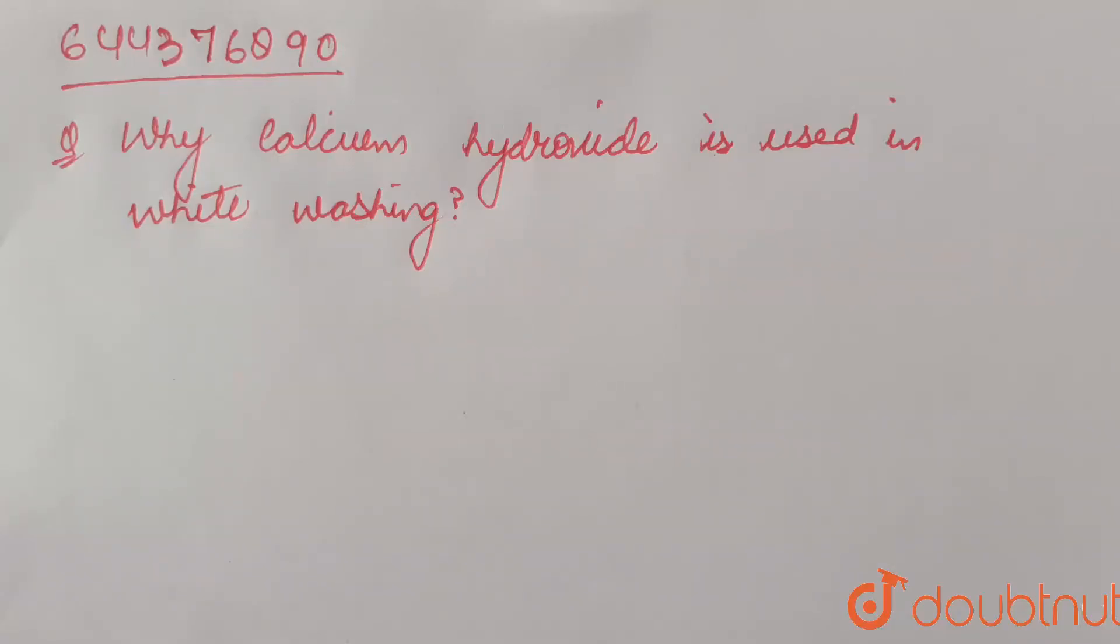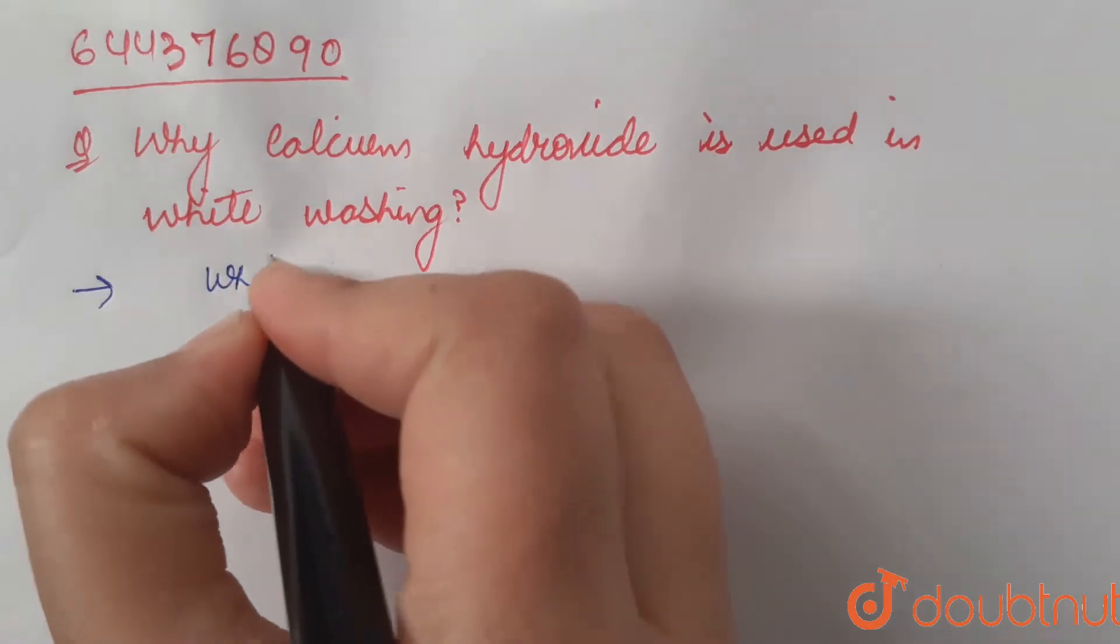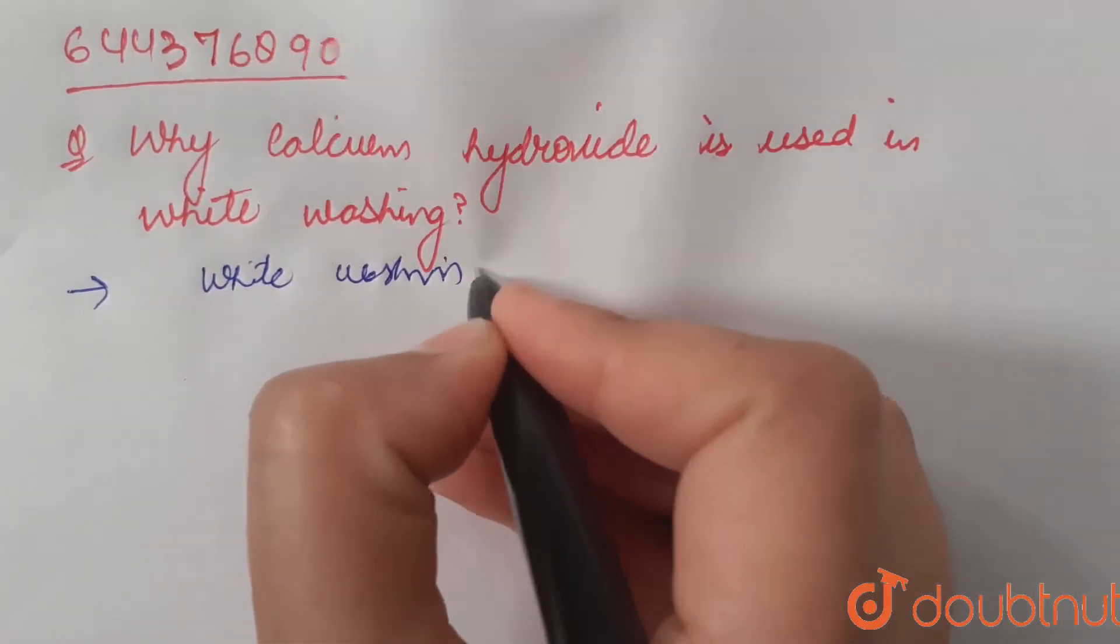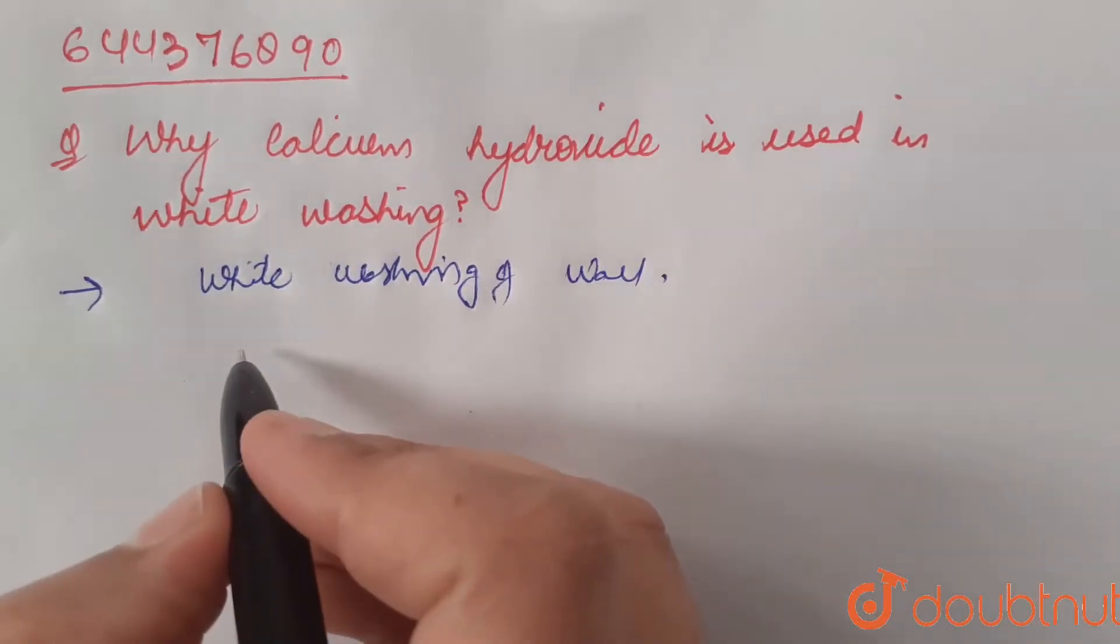Question says: Why calcium hydroxide is used in white washing? In white washing of walls, initially calcium oxide...